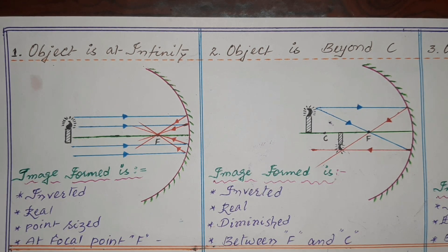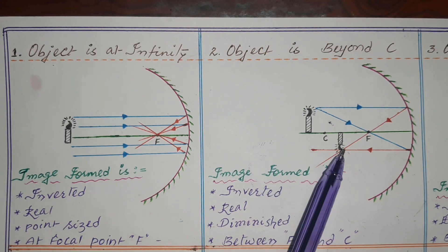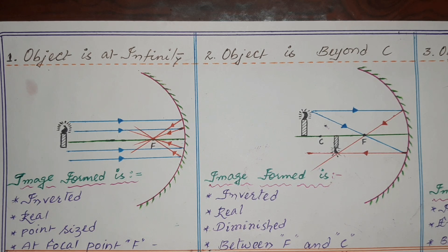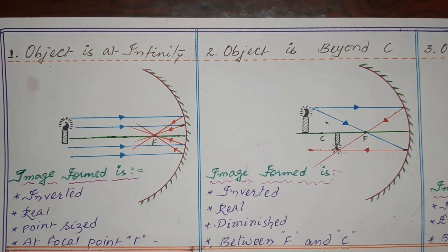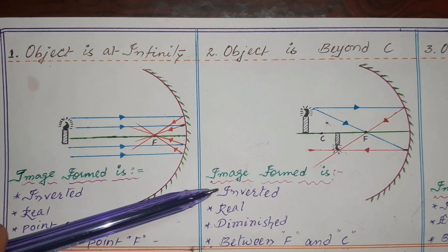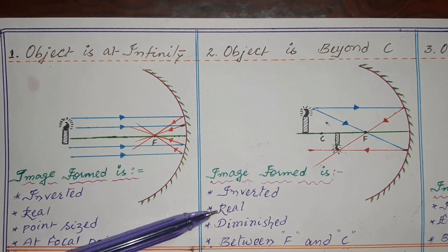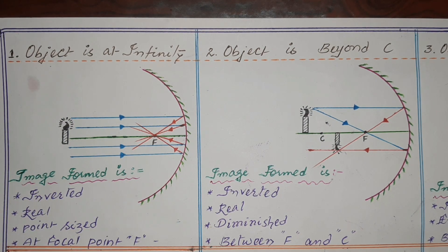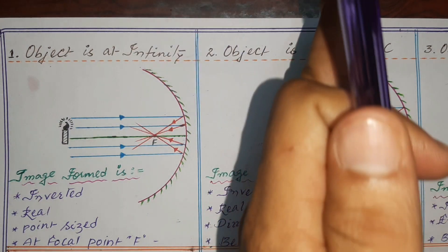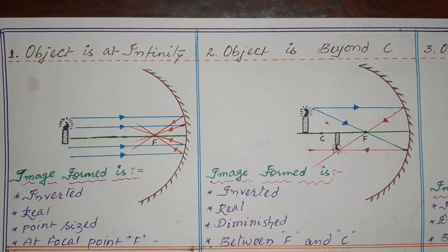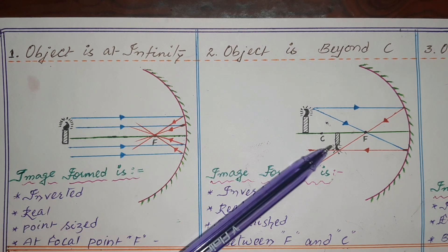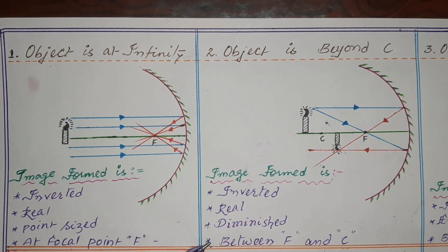When the object is kept beyond center of curvature (beyond C), the image is formed in between F and C. The characteristics of the image are: inverted (upside down), real (we can fix a screen and store the image), diminished (the image is smaller than the object), and the image is formed in between F and C.